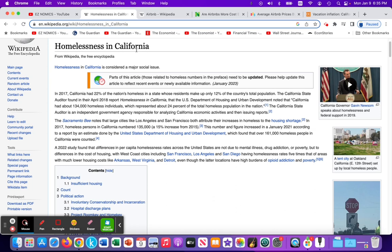Homelessness in California is particularly heightened compared to the rest of the United States. California has 22% of the nation's homeless in a state whose residents make up only 12% of the country's total population. The U.S. Department of Housing and Urban Development noted that California had about 134,000 homeless individuals, which represented about 24% of the total homeless population in the entire country. So California has one-quarter of the homeless population within their state. Why is that? Why is California experiencing such large amounts of homelessness?